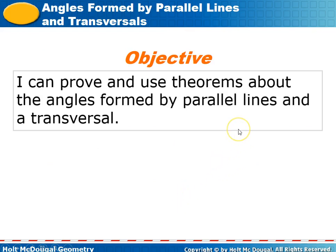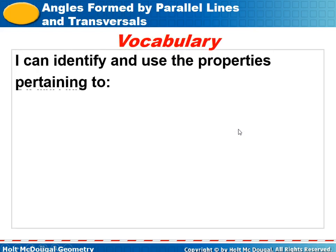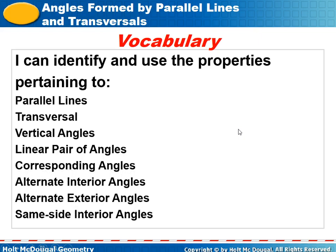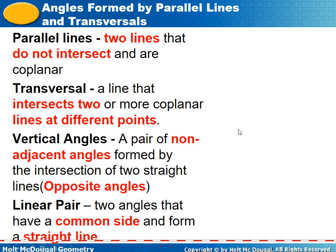The objective today is that we can prove and use theorems about the angles formed by parallel lines and a transversal. Our vocabulary includes: parallel lines, transversals, vertical angles, linear pairs of angles, corresponding angles, alternate interior angles, alternate exterior angles, and same-side interior angles.